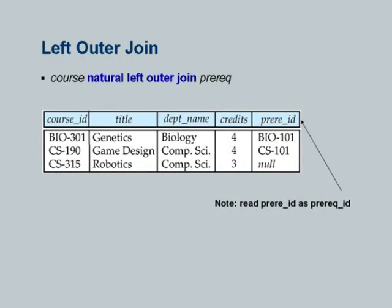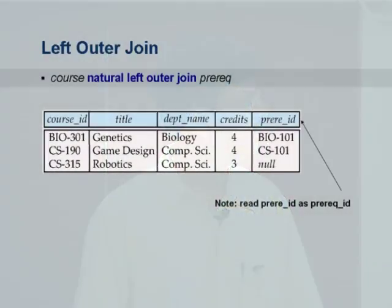In contrast, the natural left outer join states that I want all courses to appear in the result even if there is no matching prerequisite. It is possible that a course does not have a prerequisite, which is not unreasonable. If it has a prerequisite, it should be shown with each of its prerequisites. If it has no prerequisites, it is still shown, but the values from the prerequisite relation will be null. That is the meaning of the left outer join.